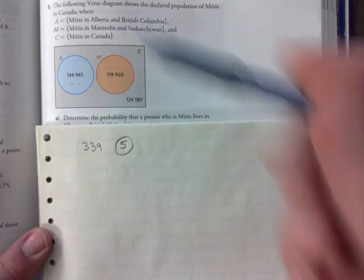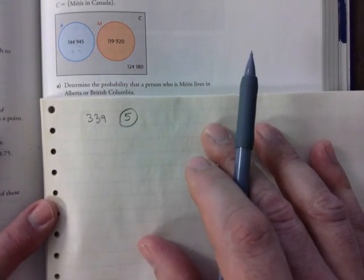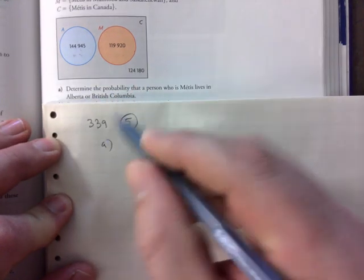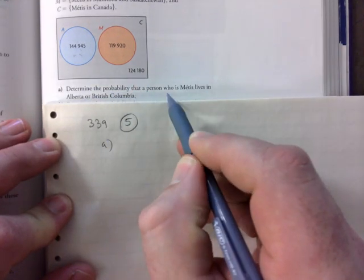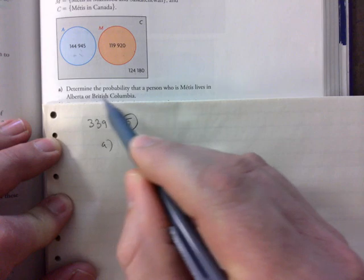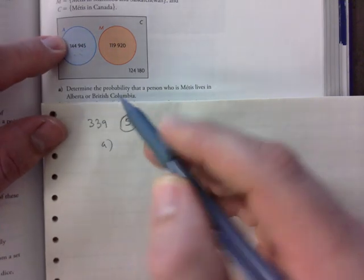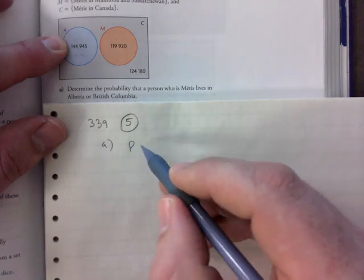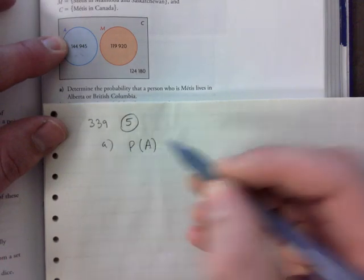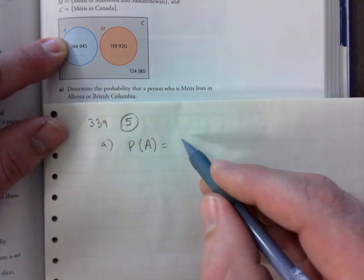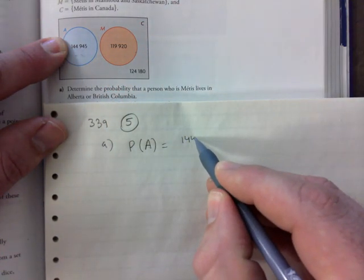Part A, watch carefully. Determine the probability that a person who is Métis lives in Alberta or British Columbia. It's basically asking for probability of A, right? Probability of being in this category. So you would just write down that number and come up with your universal.